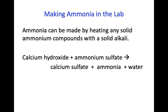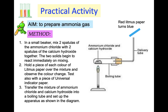What we would do is heat any solid ammonium compound with a solid alkaline. In this case we've got calcium hydroxide, a solid alkaline, and we will be heating it with ammonium sulfate. This will produce calcium sulfate, ammonia, and water. We would have clamped our boiling tube above a Bunsen burner with ammonium chloride and calcium hydroxide mixed together at the bottom. There's a delivery tube through the stopper, and above that you would hold some red litmus paper. When the ammonia gas hits the litmus paper, as it is an alkali, it will turn blue.